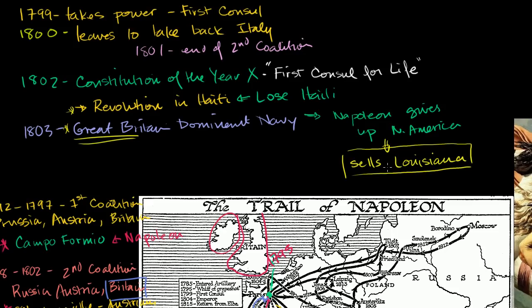Napoleon had been amassing troops thinking about an invasion of Great Britain, but he realized he could never realistically do that. Great Britain starts to feel self-confident and doesn't like all the gains Napoleon made in the last two wars. So Great Britain — the United Kingdom of Great Britain and Ireland — declares war in 1803. You could view this as the beginning of the War of the Third Coalition, but it's not a coalition yet. It really gets heated in 1805, when everyone else jumps in and we're talking about a real coalition.